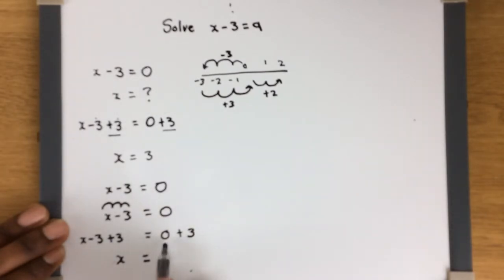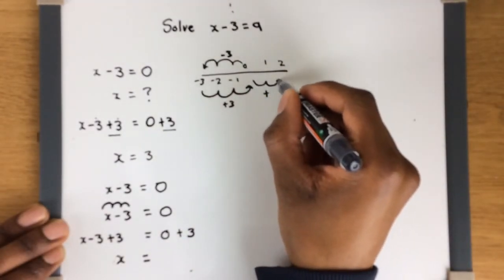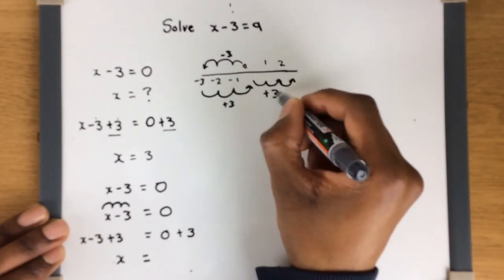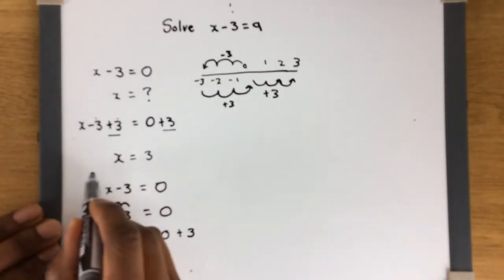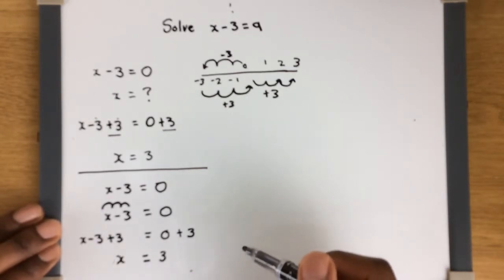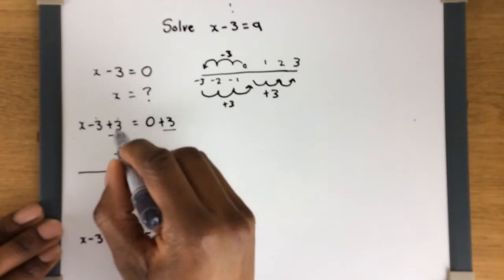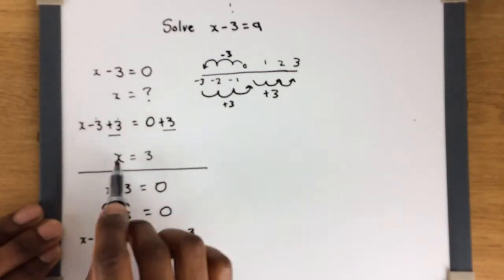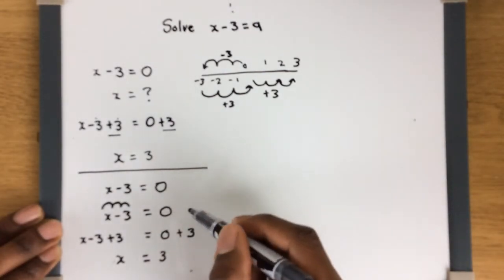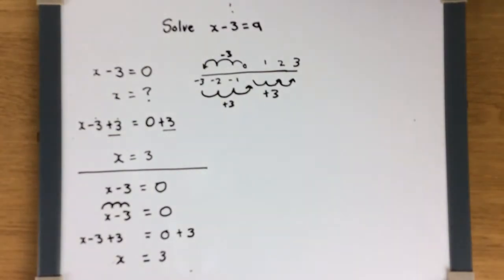That's equal to 0 plus 3. On this number line, we're starting at 0 and doing plus 3 — jumping 1, 2, 3 — so we end up at 3. So x equals 3. Those are two ways of doing it. You just look at the sign on the number being subtracted and do the opposite to make the two cancel out, then do the same thing to the other side.